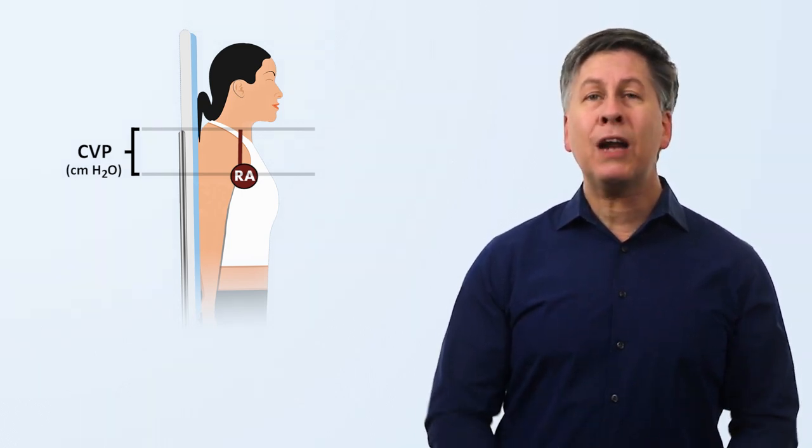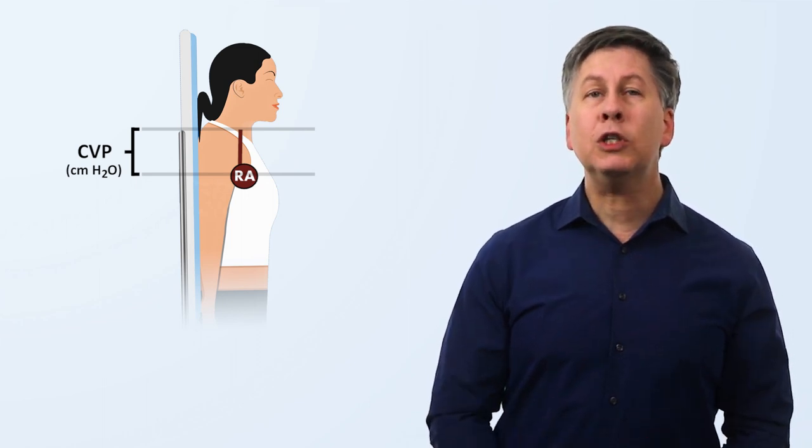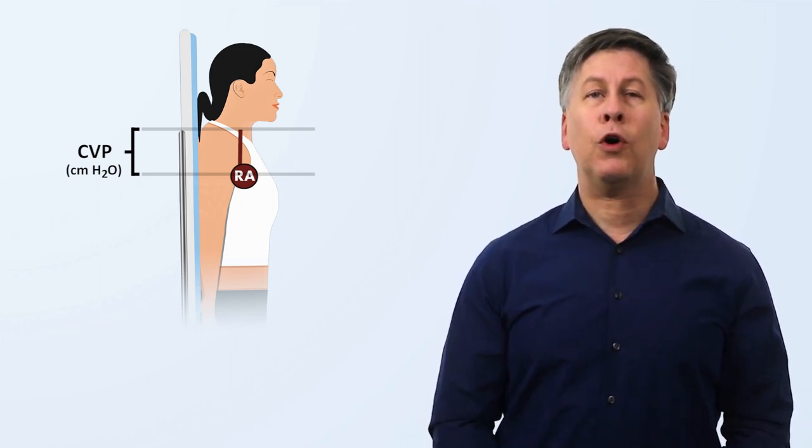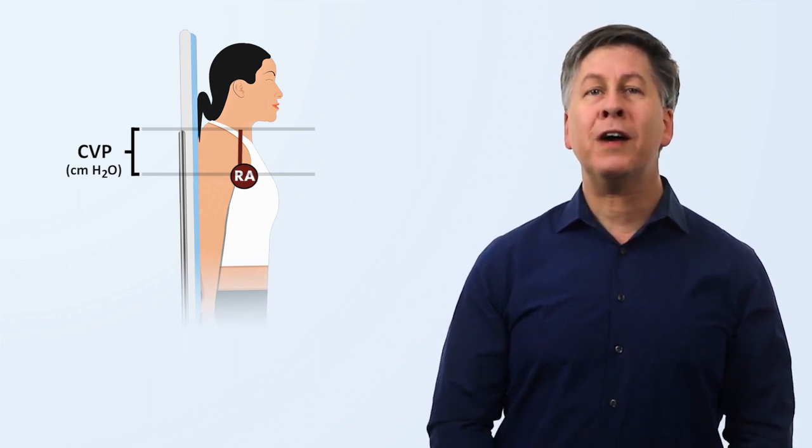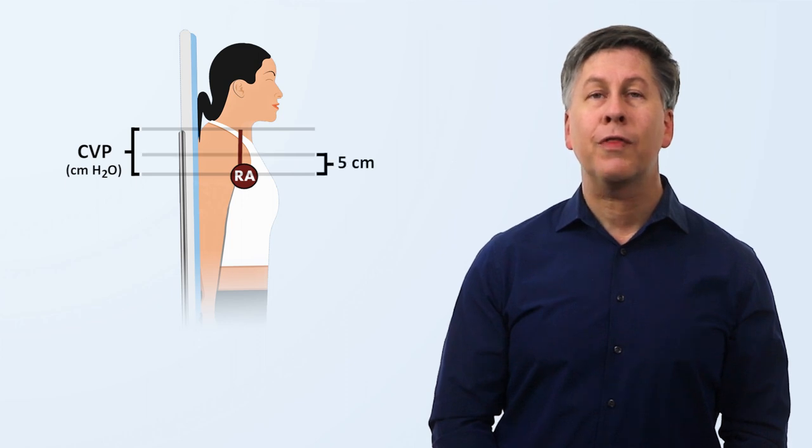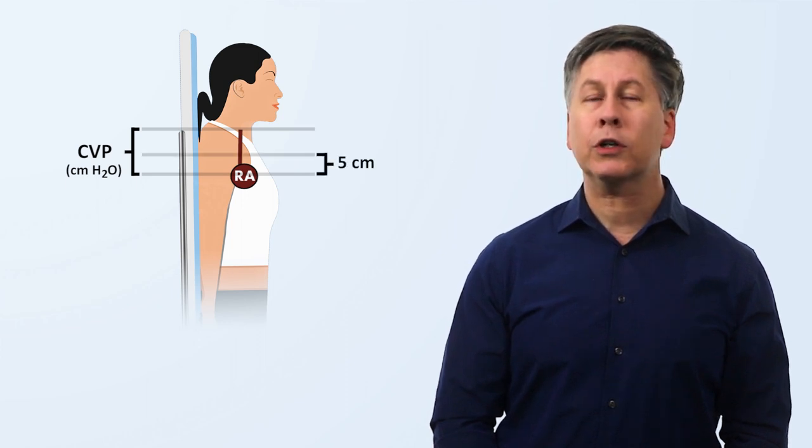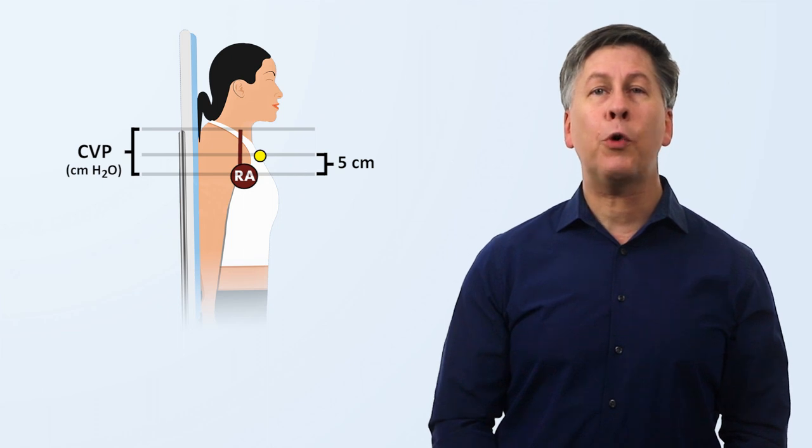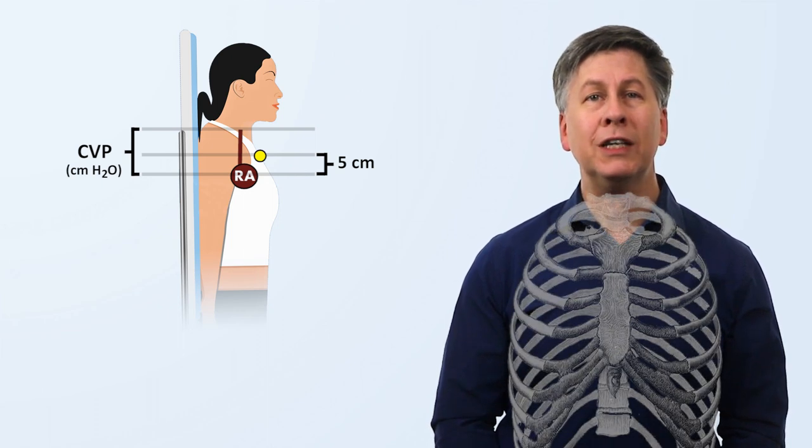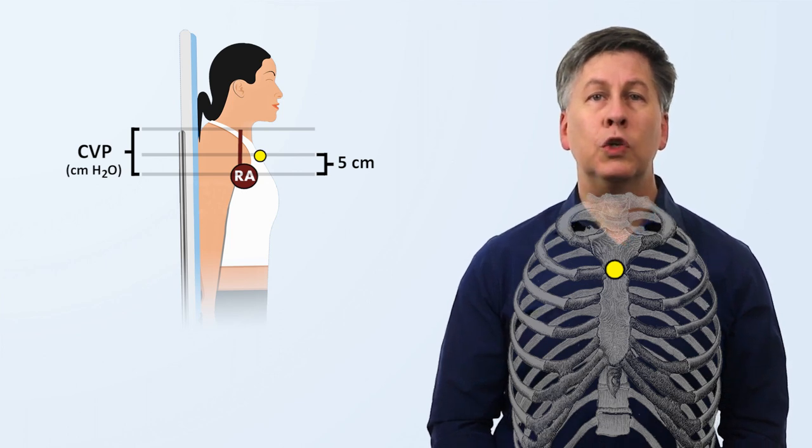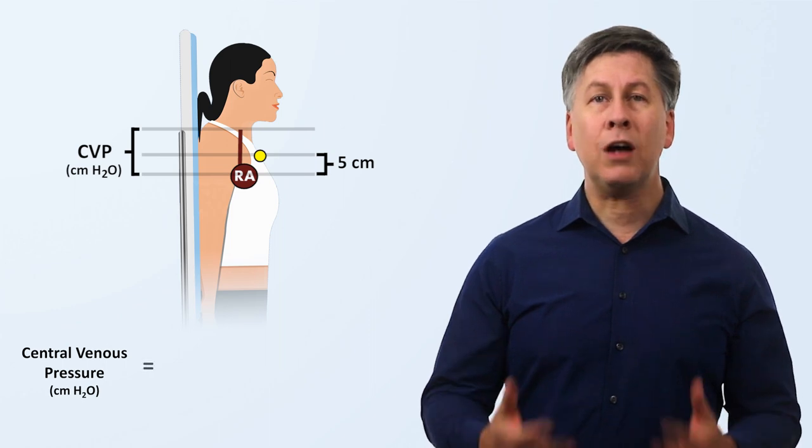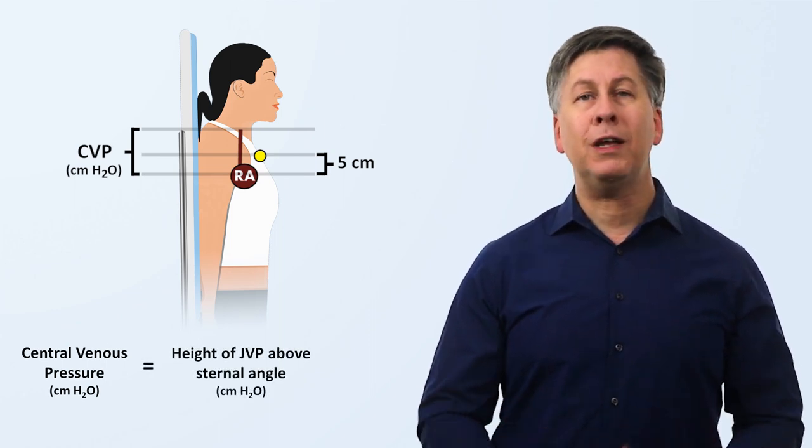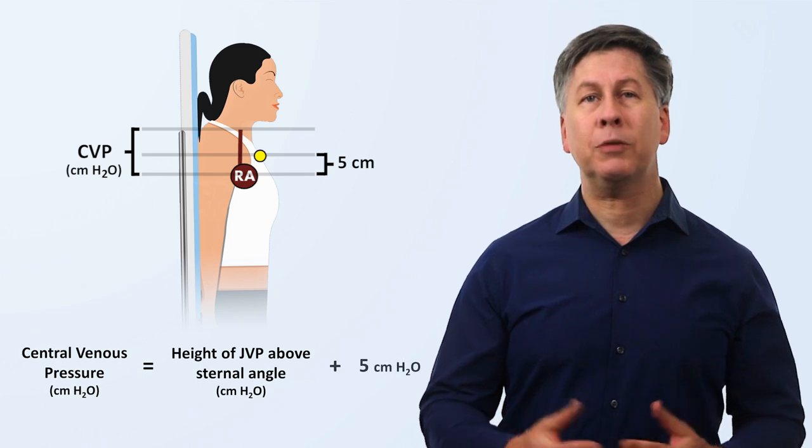But how do we know where the right atrium is? Clinicians make an assumption based on an old observation that the right atrium tends to sit approximately five centimeters closer to the earth than a palpable external landmark called the sternal angle, which is the subtle bony prominence in the center of the chest where the manubrium joins the body of the sternum. So one can therefore determine the central venous pressure in units of centimeters of water as the sum of the height of the JVP above the sternal angle and five centimeters.